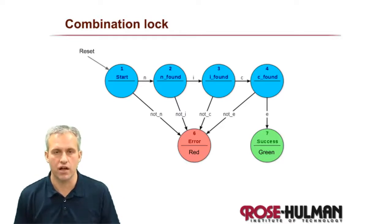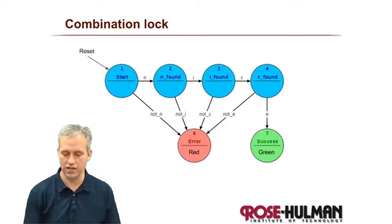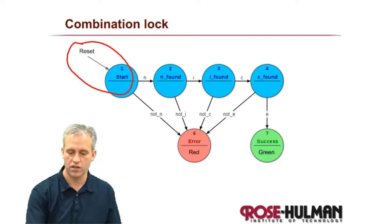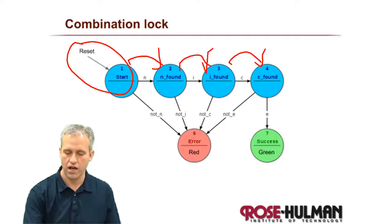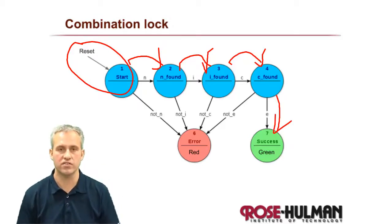Combination locks are kind of a classic finite state machine because they follow a very nice progression. You've got some state where it starts, the first digit in the lock, the second, the third, and then if you finish successfully, you go to the success state, it unlocks.